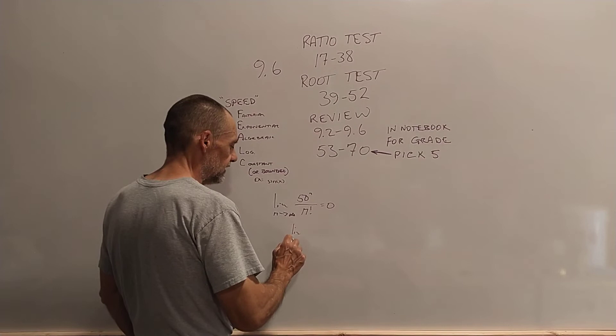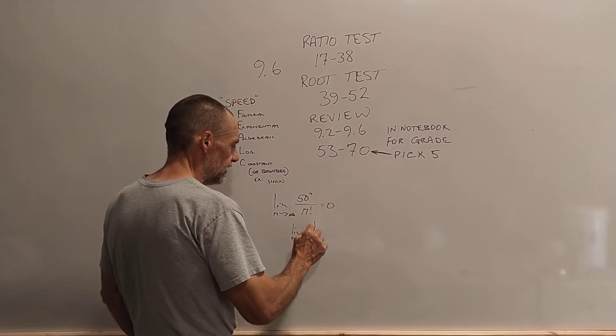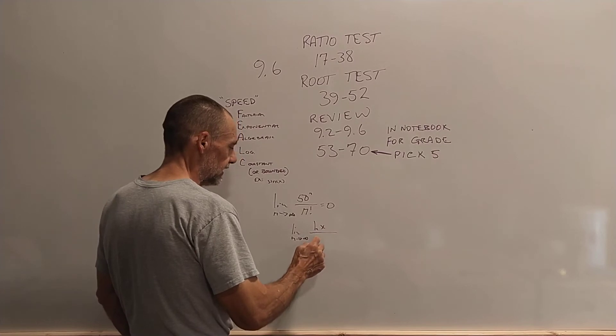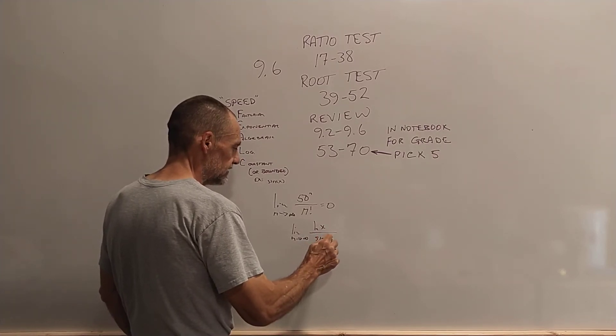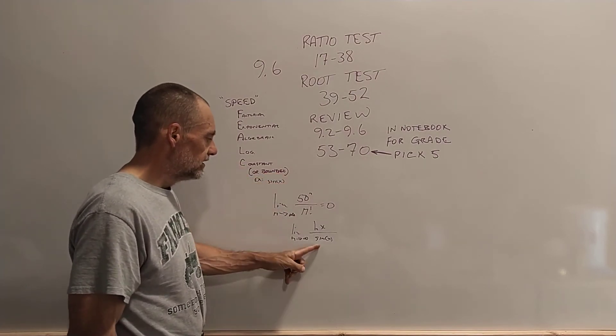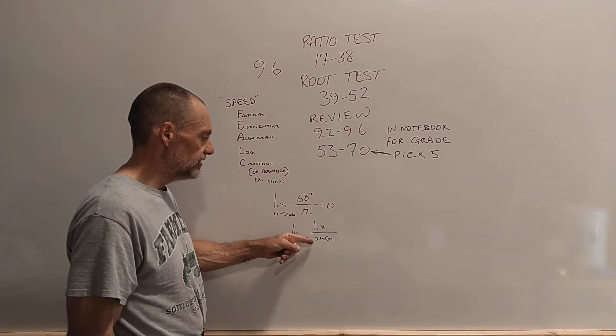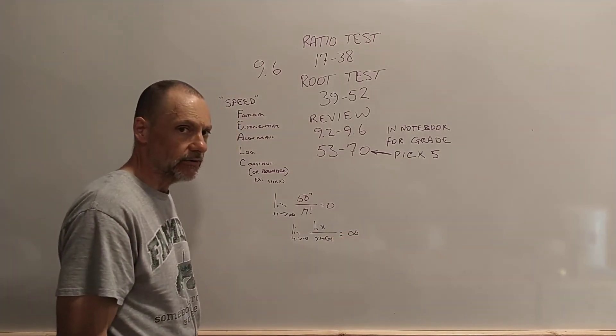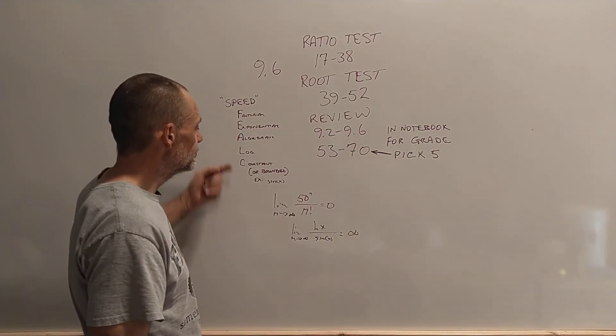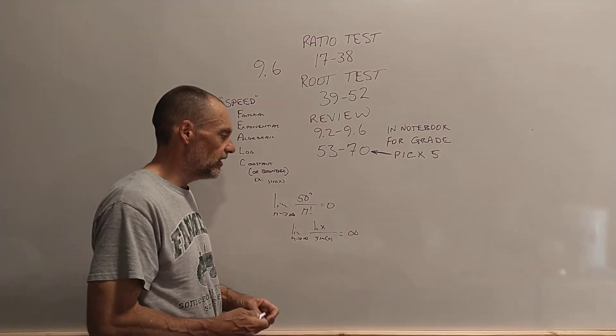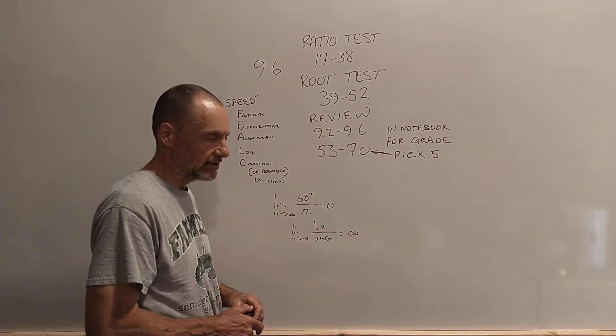So you've got the limit as n approaches infinity of log of anything over something like, let's say, sine x. So this is a constant, basically, it's bounded. So it's on the bottom, so log x, this is increasing faster than this, so this thing increases without bound. So using this faster and slower thing, what it basically does is it gives you a very, very quick way to take these limits.